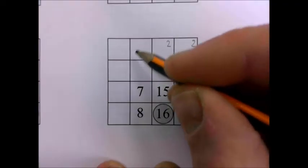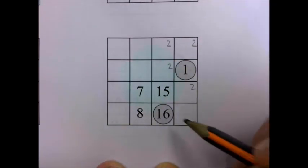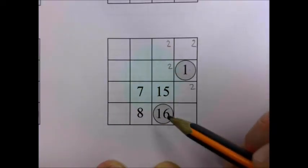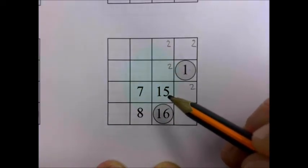From there, obviously three could also be in a number of different places until we get to seven and eight. And even then, there'd be some challenges to get to fifteen and sixteen.